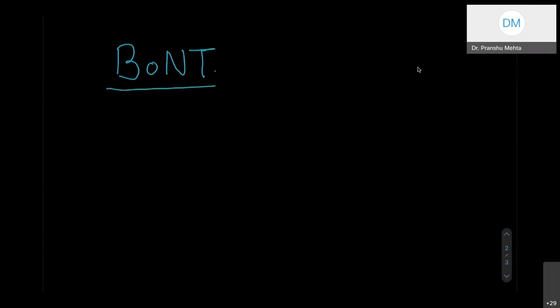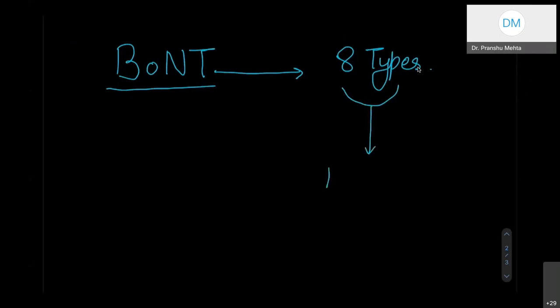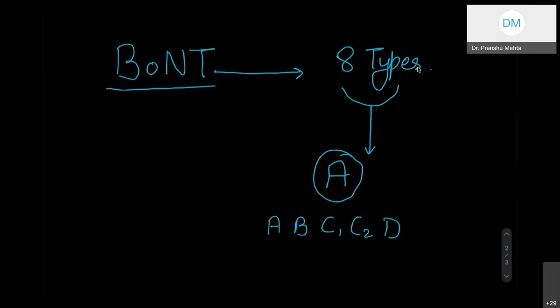The ones which are commercially used are mostly A, and very rarely B, but not the others. Type A is the one we use even in facial aesthetics and is the one we'll be talking about today. BoNT was actually discovered two centuries back — it's not something that has come up in previous years. There are eight types of Botox in total.